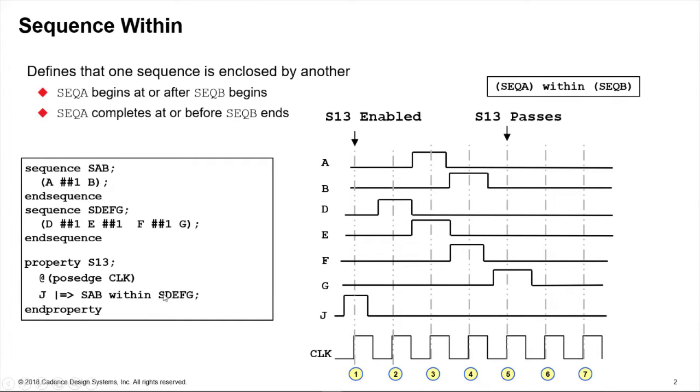The right hand side requires that from the next cycle I get this sequence SDEFG start and then continue to completion, and also the sequence SAB is contained within that.